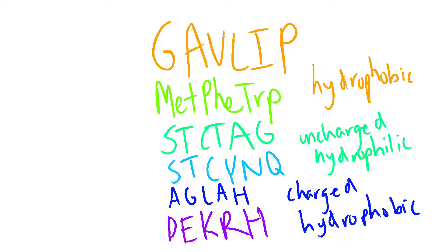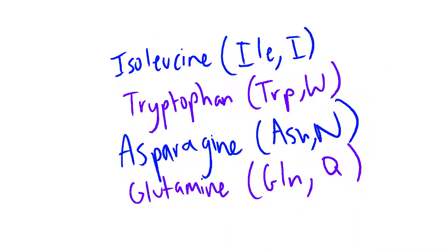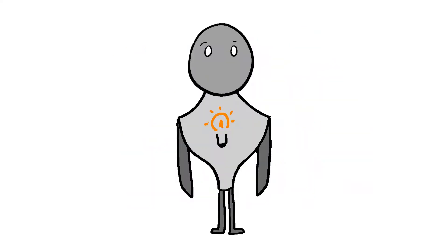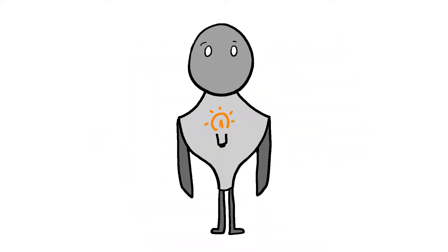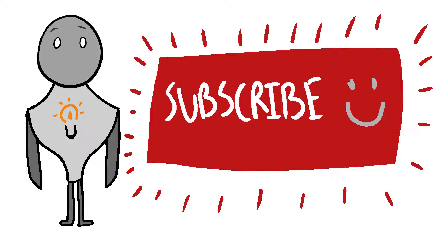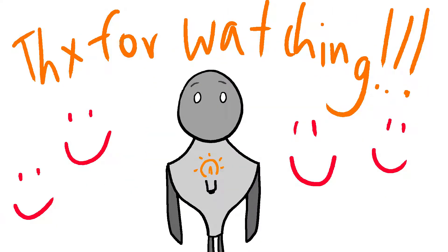All amino acids except for isoleucine, tryptophan, asparagine, and glutamine have the first three letters as a three-letter abbreviation. That's all I have for memorizing whether an amino acid is hydrophobic or hydrophilic, its abbreviations, and its molecular structure. Let us know whether there's anything you'd like covered in the comments below, and we'll be sure to make a video about it. If you enjoyed the video, please hit that like button and subscribe for more educational content. See you guys next time.